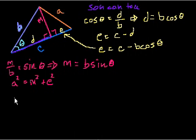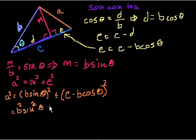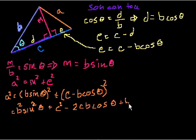What's M squared plus E squared? So A squared is equal to M squared. M is B sine of theta, so it's B sine of theta squared plus E squared. Well, E we figured out is this. So it's plus C minus B cosine theta squared. Now let's just chug through some algebra. So that equals B squared sine squared theta. Plus, and let me just FOIL this out, C squared minus 2CB cosine theta plus B squared cosine squared theta.